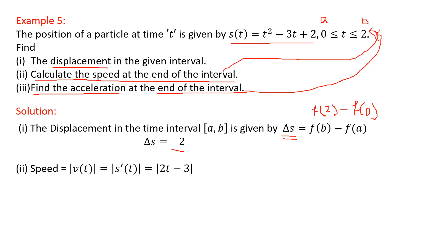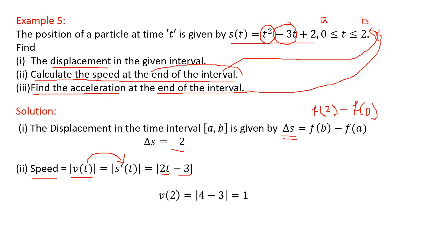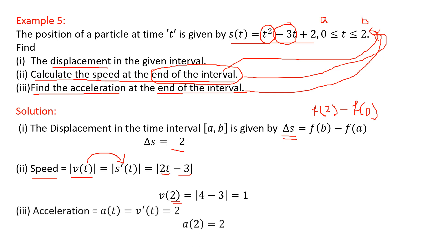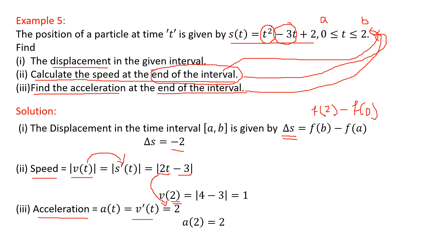For question 2, speed is the absolute value of velocity. Velocity is the derivative of the position function. Differentiating gives v(t) = 2t − 3. Substituting t = 2 gives v(2) = 1, and taking the absolute value gives speed = 1. Remember: even if a negative value appears, you take its absolute value. For acceleration, differentiating velocity gives a(t) = 2, so a(2) = 2.